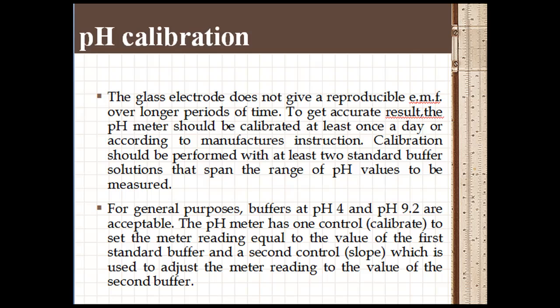pH calibration: The glass electrode does not give a reproducible electromotive force over longer periods of time. To get accurate results, the pH meter should be calibrated at least once a day or according to manufacturer's instructions. Calibration should be performed with at least two standard buffer solutions that span the range of pH values to be measured.